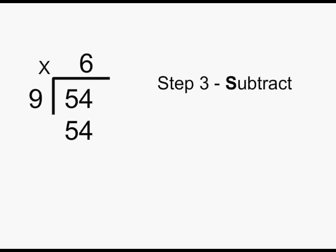Step 3 is to subtract. 54 subtract 54 is 0. We have finished dividing all of our numbers inside the box, so we are finished. Our answer is 6, which is also called the quotient.